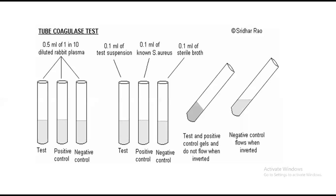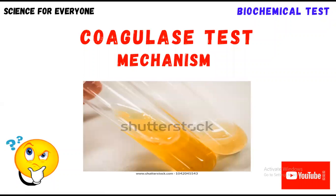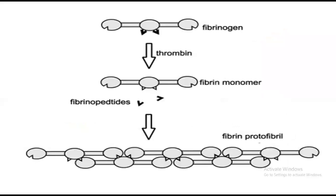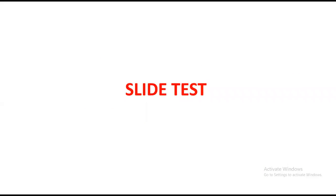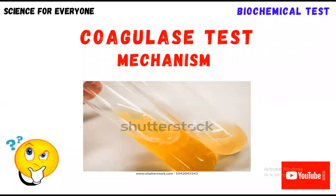This was all about the coagulase test. I hope you have understood it well — the principle, the main mechanism, and the procedure. These mechanism slides are very important — a microbiologist should know what is happening inside this test. The procedure can be done by anyone working in a laboratory, but understanding the main mechanism is key. If you have any questions, ask me in the comment box. Thanks for watching — God bless you.